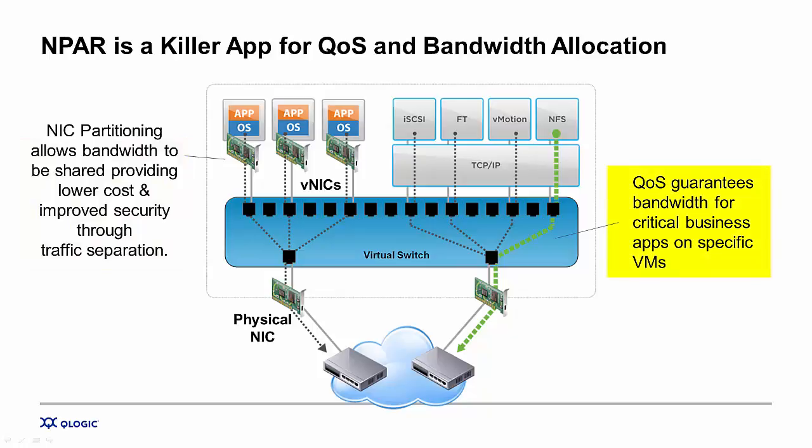In addition, N-PAR allows the administrator to control the quality of service — that's the bandwidth and the I-O performance — for each virtual function within 100 megabit increments.